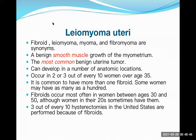This is leiomyoma of the uterus, also known as fibroid, myoma, or fibromyoma — all synonymous terms. Fibromyoma is a structure made of fibrous tissue as well as smooth muscle. It is a benign smooth muscle growth of the myometrium.